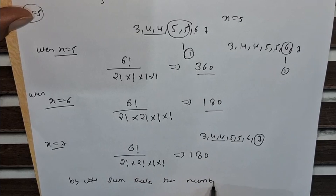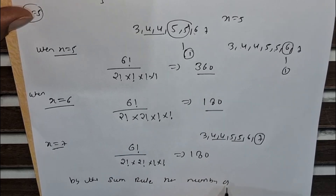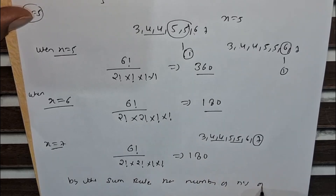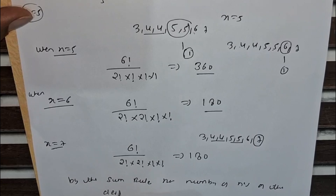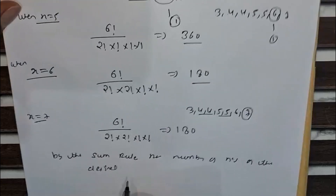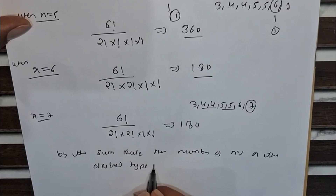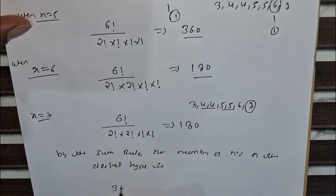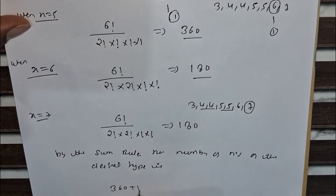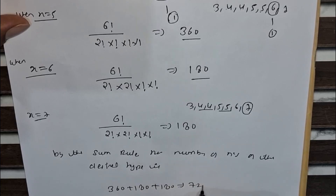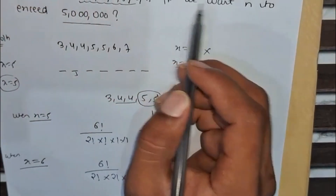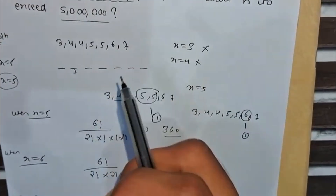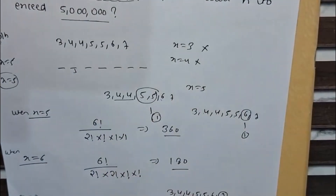By the sum rule, the total number of positive integers of the desired type is 360 + 180 + 180 = 720. So 720 positive integers can be formed using the given digits that are greater than 50 lakh.